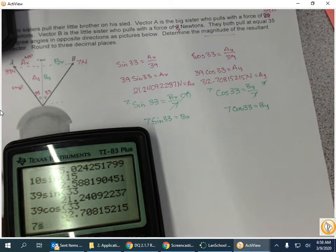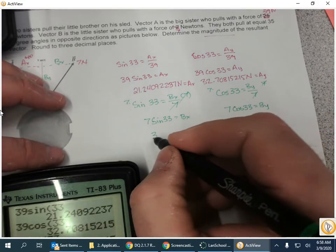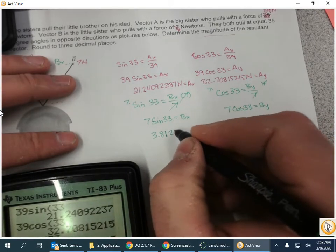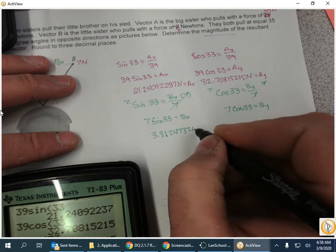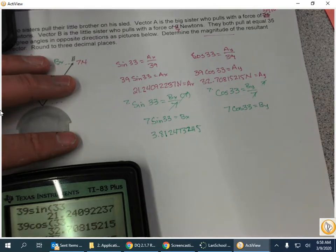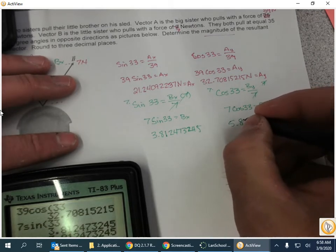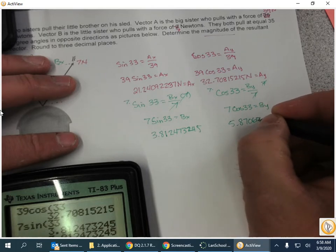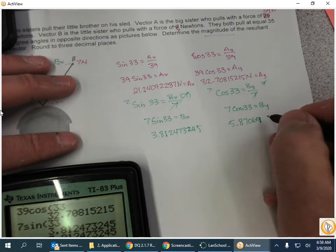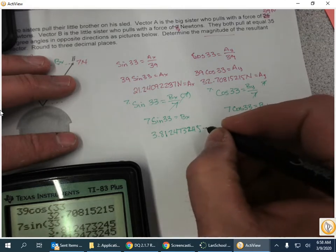So 7 sine 33 gives me 3.812473245 and 7 times the cosine of 33 gives me 5.870693976, and those are both newtons.